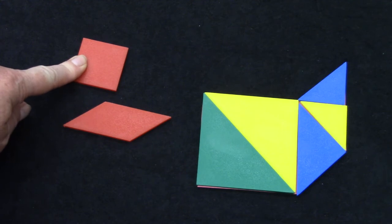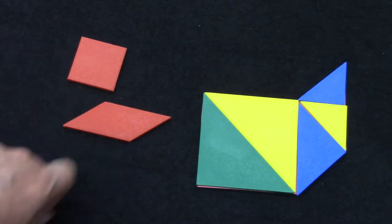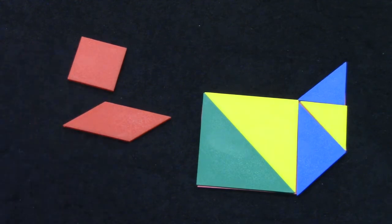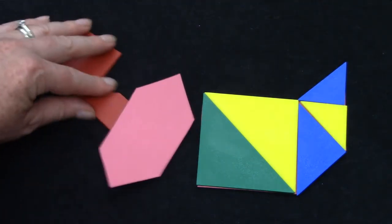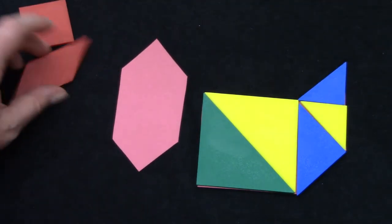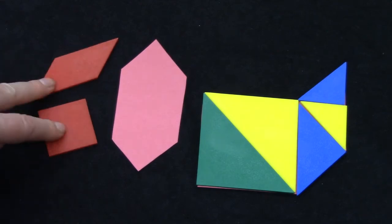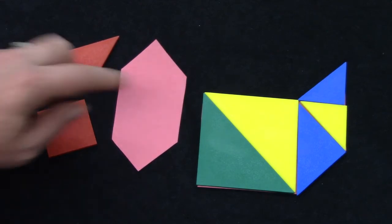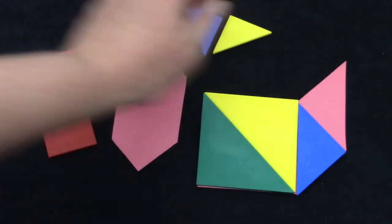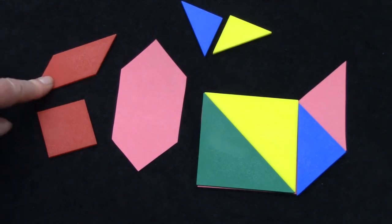I kept the square and the parallelogram free. Alright, I have another shape here and I'm going to try to cover that one. These two that were left over and my two little triangles. So let's see.